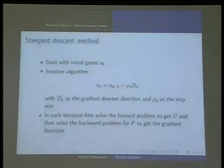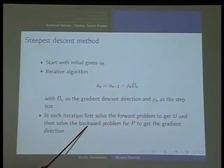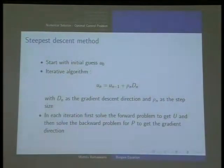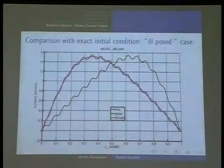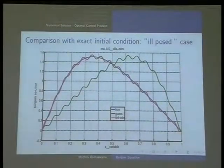I will briefly describe the algorithm. We started with the initial guess U^0. The initial guess is going to be the guess for your initial condition which we are trying to find out. The iterative algorithm goes like this: you have to add rho_n times d_n, and d_n is the gradient descent direction. In each iteration, we first solve the forward problem using one of the discretizations, then we use the corresponding adjoint problem for the backward one to calculate p, that will give me p at 0, and then I have the gradient. Once I know the gradient, we have the next iterate. This is how the algorithm goes.